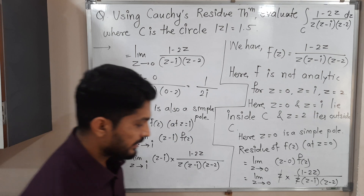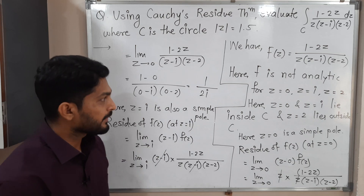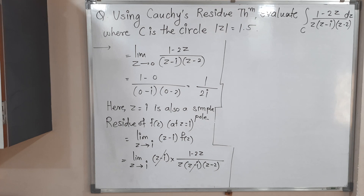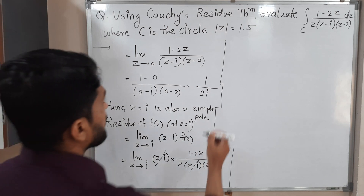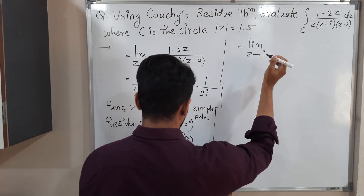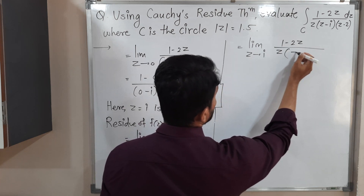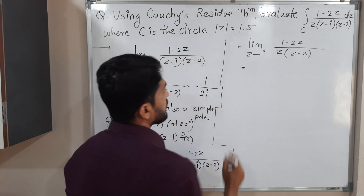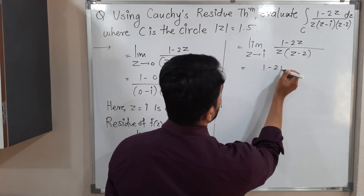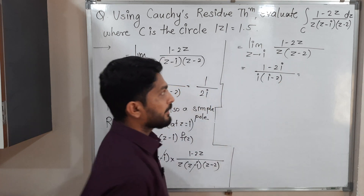After canceling (z minus i), we solve the limit: limit as z tends to i of (1 minus 2z) upon z(z minus 2). Substituting z equal to i: (1 minus 2i) upon i times (i minus 2). We need to simplify further.